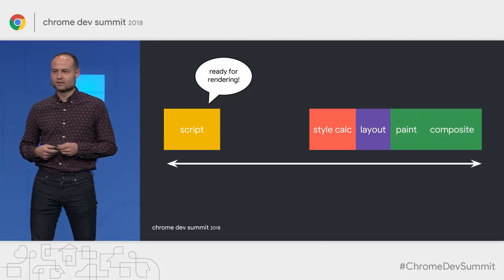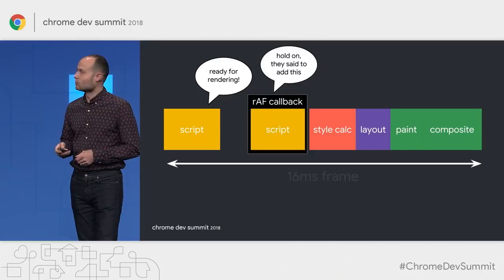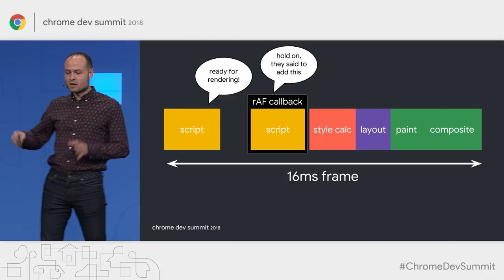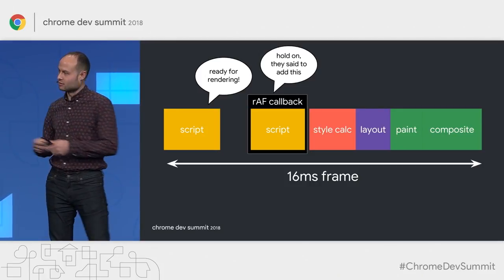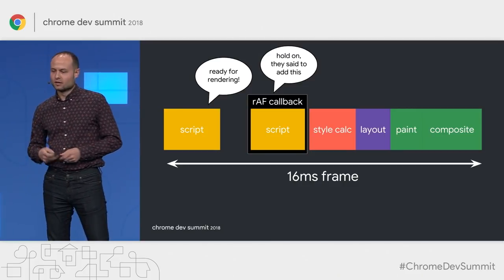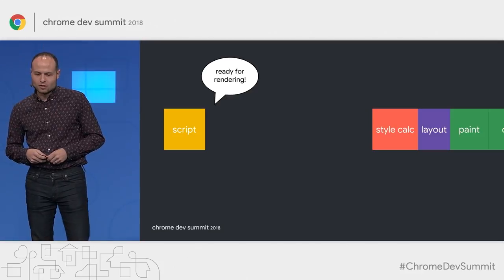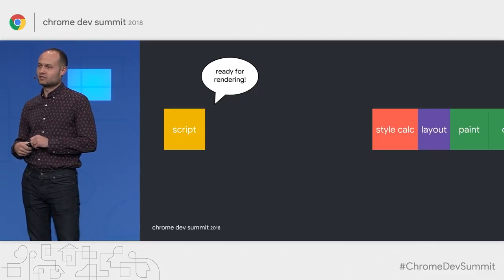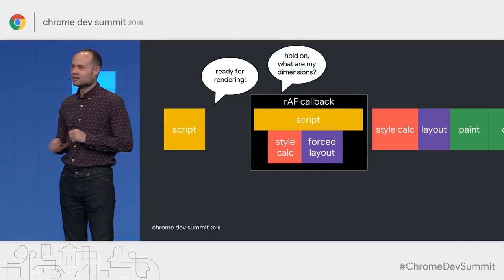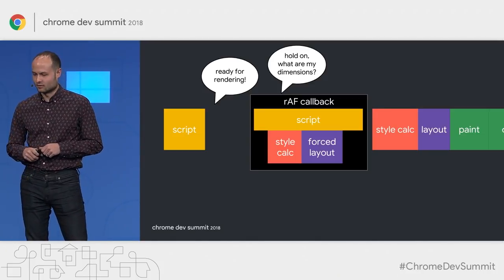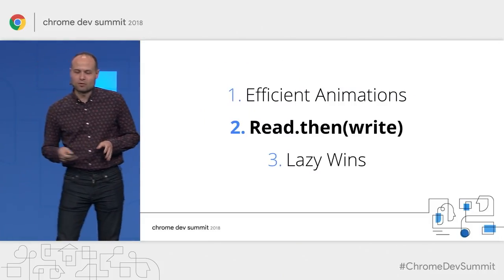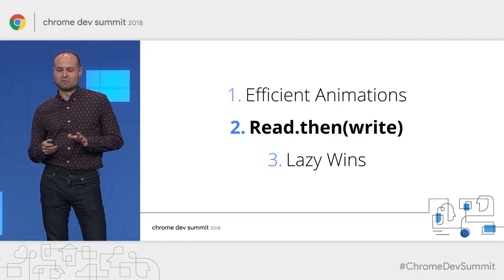You might be tempted to use requestAnimationFrame to fix this — that's often a good strategy. requestAnimationFrame callbacks fire just before the browser does all its rendering work. You might read some values synchronously in the script block, then enqueue an animationFrame callback where you do your DOM writes — read and then write using the RAF callback. For really well-behaved code, this is an awesome way to give the browser more control over your rendering code. However, deferring reads using requestAnimationFrame doesn't actually fix this problem: it can still trigger forced synchronous layout inside the RAF callback, which can sometimes be worse. Reading properties that require layout information before modifying layout is an important thing to keep in mind when interacting with the DOM.